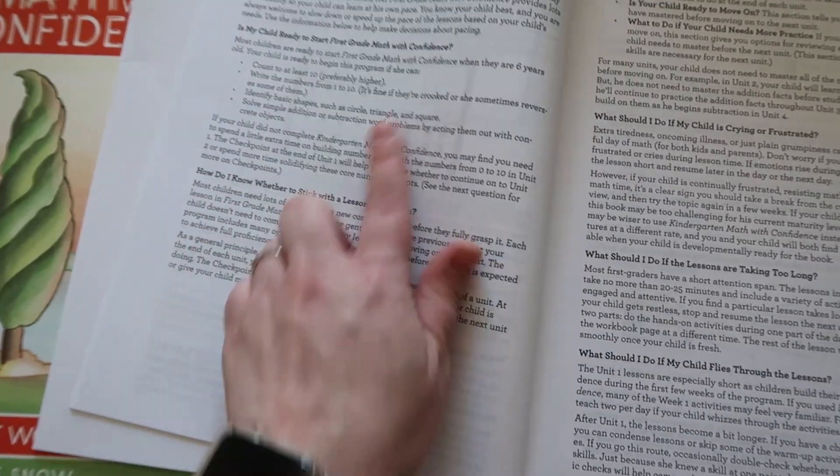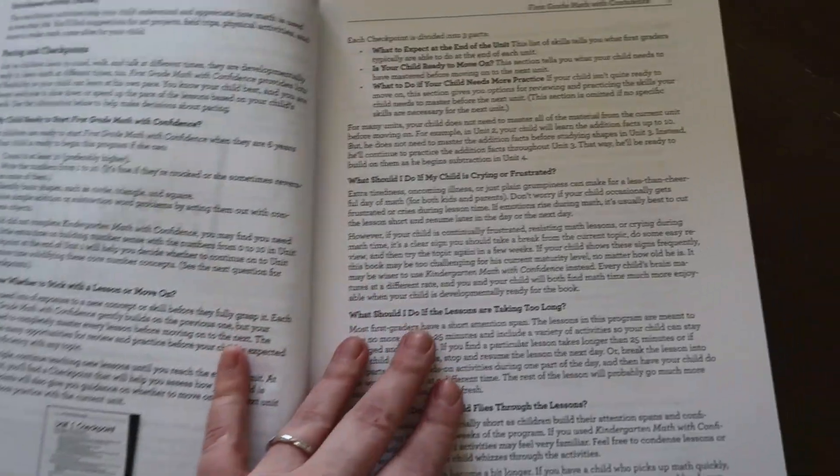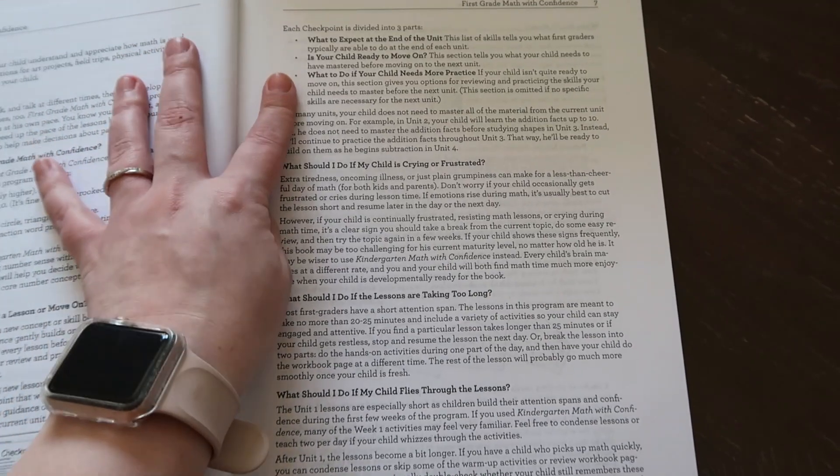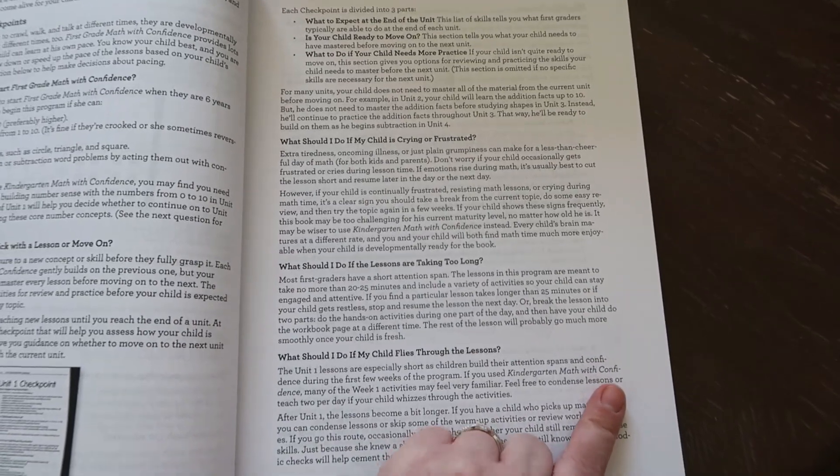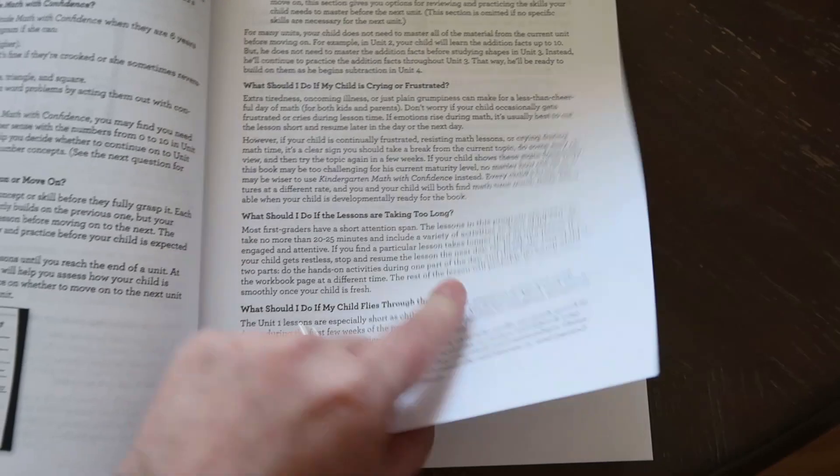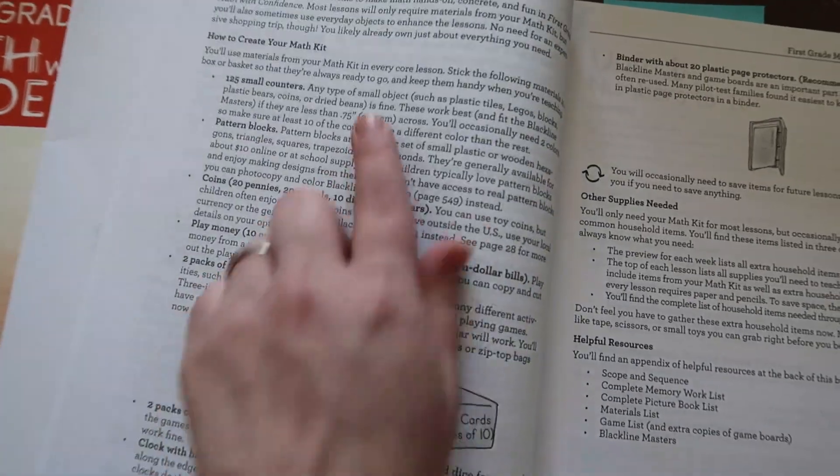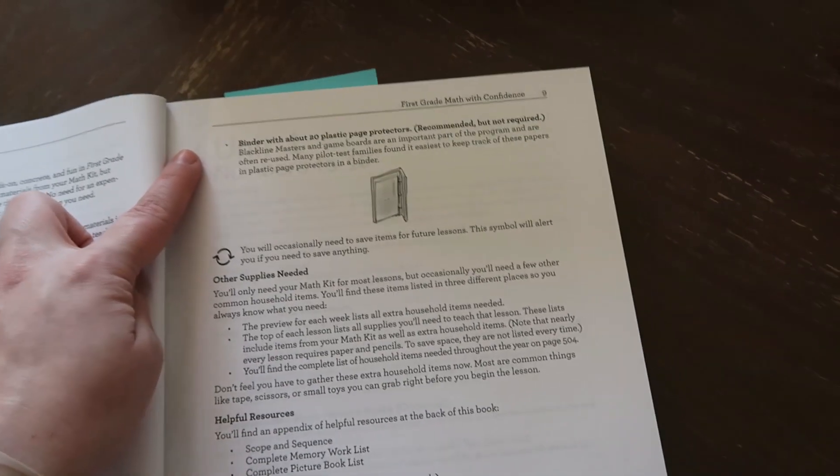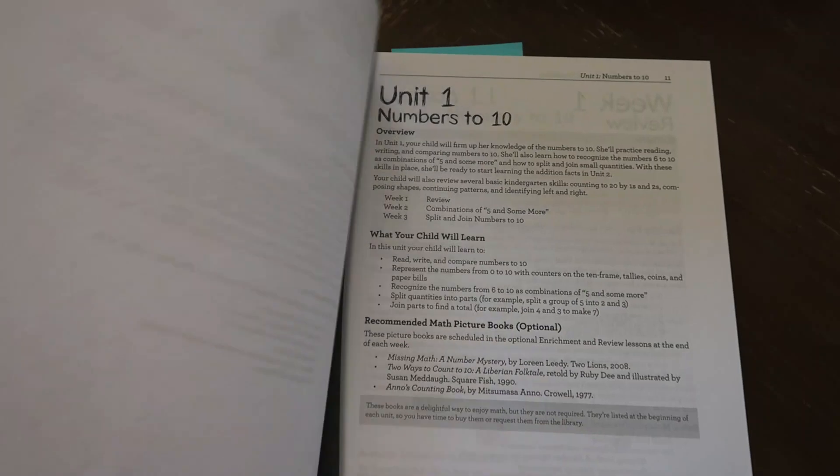It talks about is my child ready to start, how do I know whether to stick with the lesson and move on, which I think can be difficult for us homeschooling parents. What to expect at the end of the unit, are they ready to move on, what to do if they need more practice, what should I do if my child is crying or frustrated, what if the lessons take too long, what if they fly through it. Just lots of great questions and answers. It talks about how to create your math kit and then it has everything here and then other supplies needed and helpful resources. So that is all at the beginning.